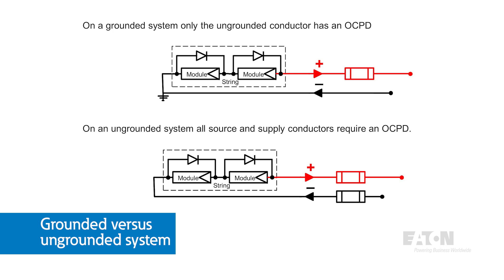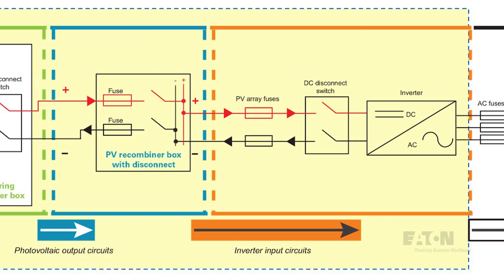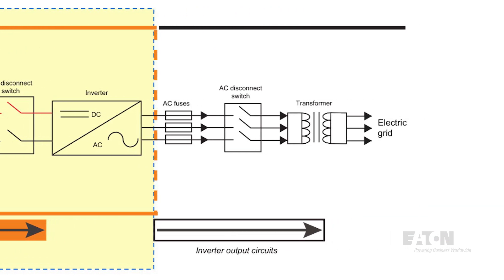In an ungrounded system, you are required to have an overcurrent protective device on both the positive and negative DC conductors. Next is the PV output circuit. Whereas the source circuit contains protection and combination for individual strings, the output circuit does so for the entire array. An overcurrent protective device is used to isolate and protect the PV output circuit conductor. If the PV system contains only one array, the output circuit and the inverter input circuit will be the same. The final combined PV output is then fed into the inverter, which converts the DC to AC. Overcurrent protective devices in this circuit protect the conductor feeding the DC side of the inverter, as well as the inverter itself. Finally, the inverter output circuits connect the PV system to the grid. This part of the system is AC, which is more familiar to designers and installers.